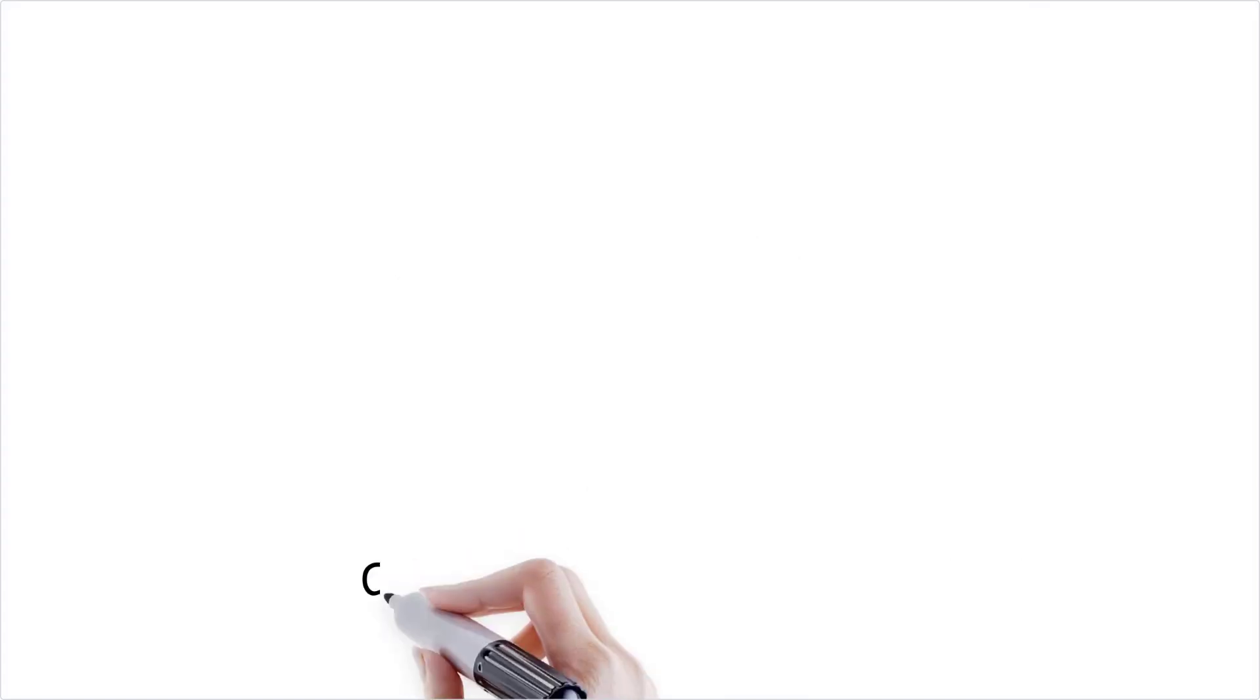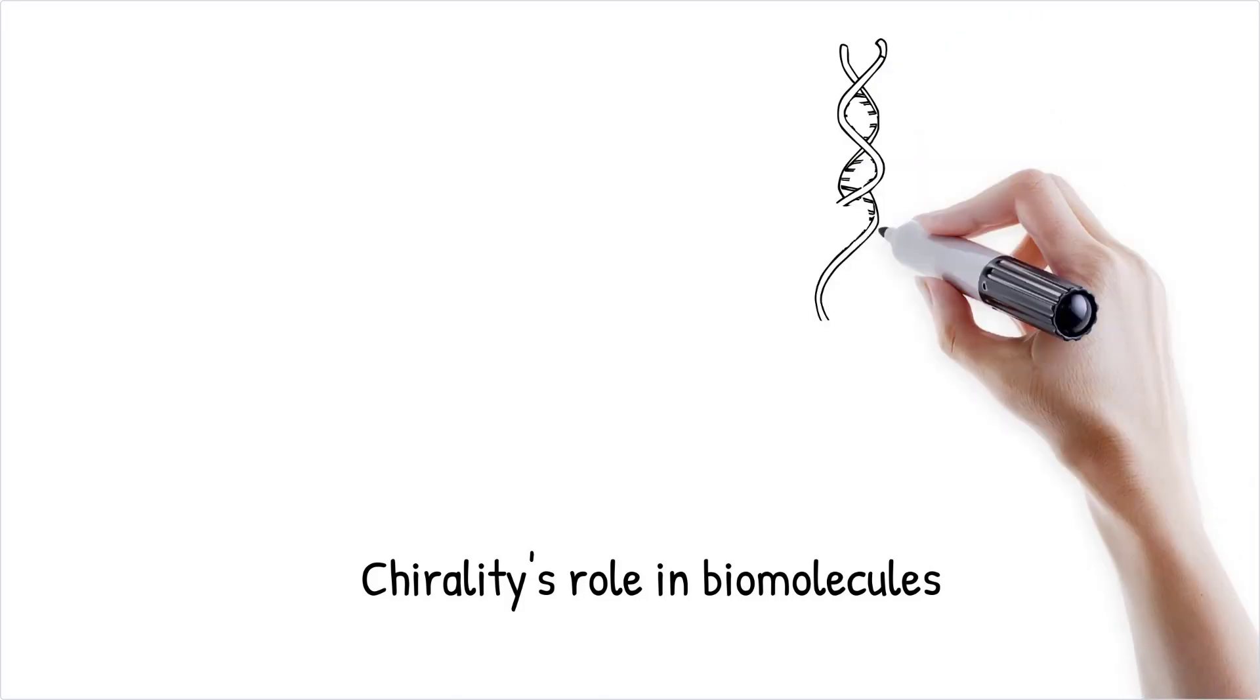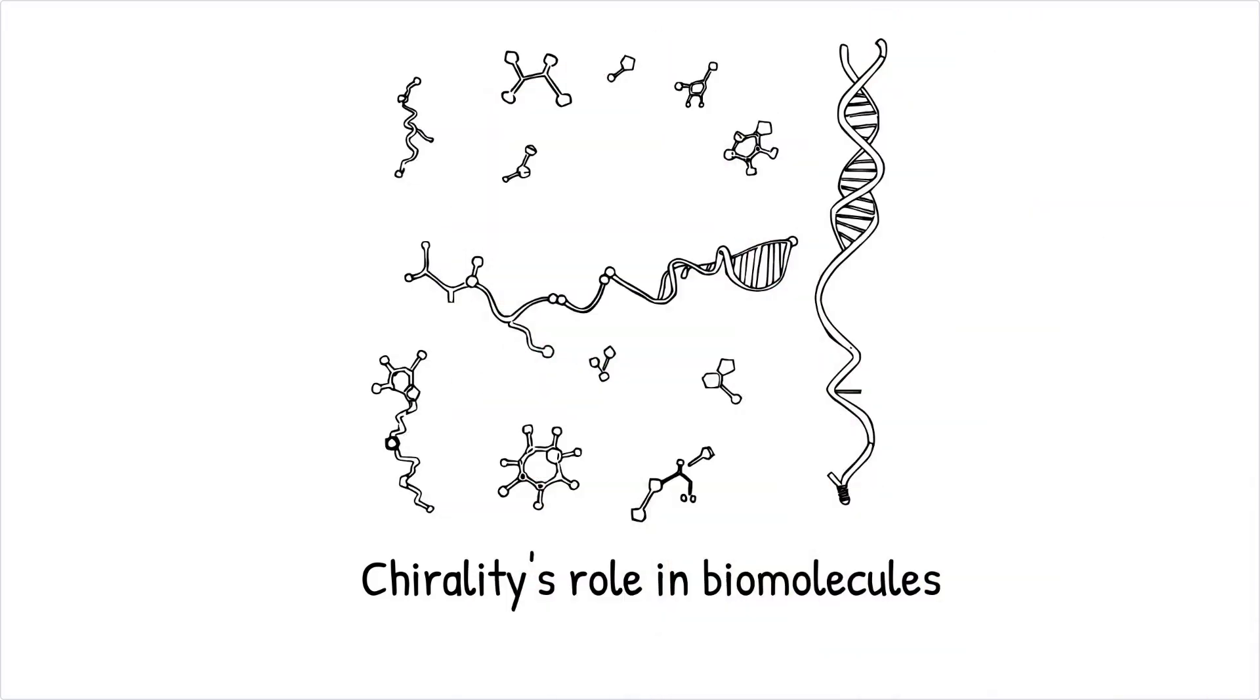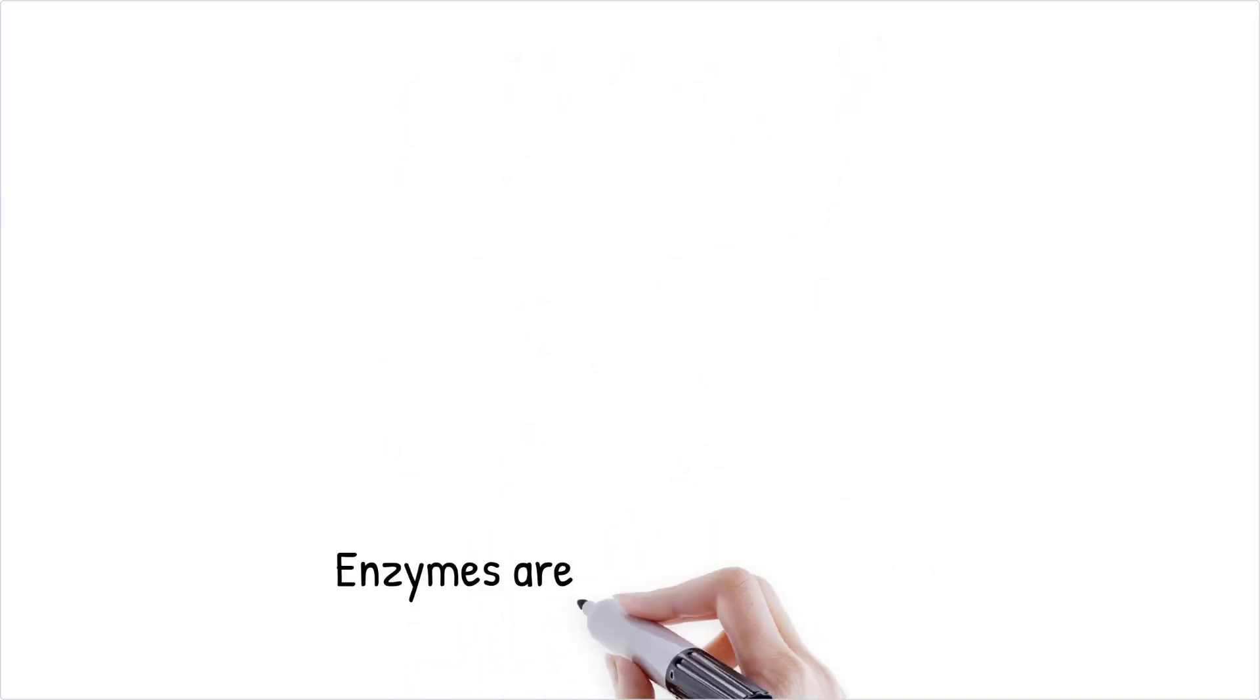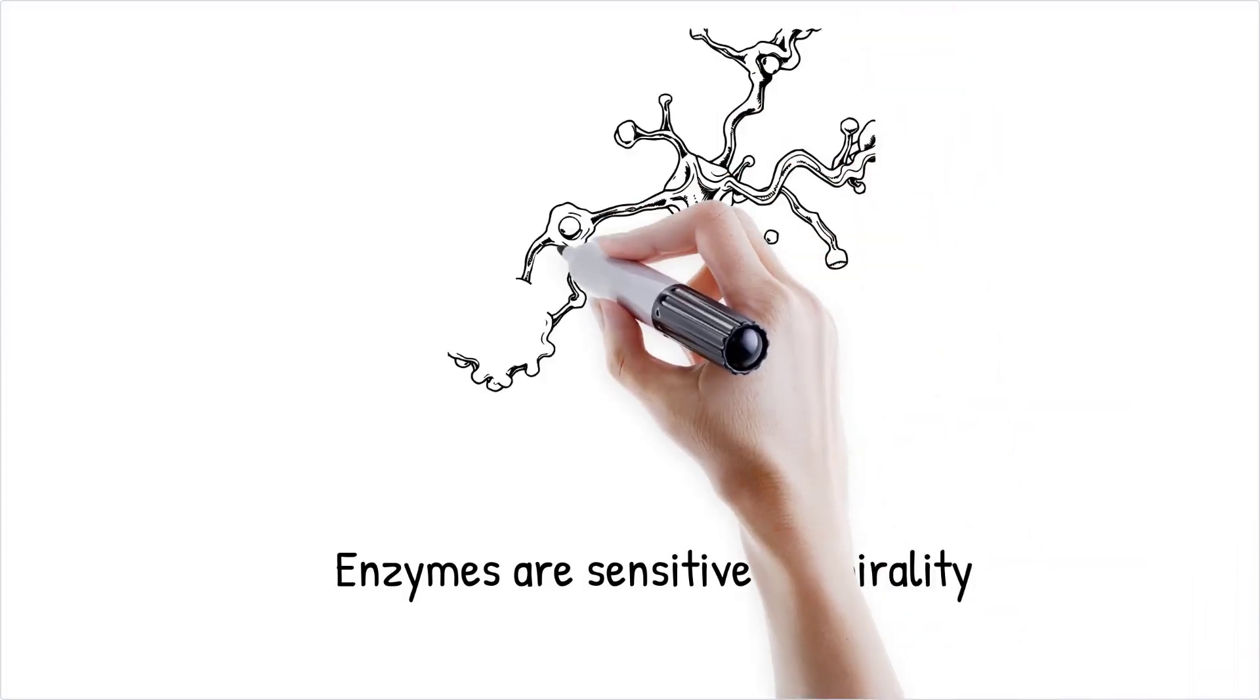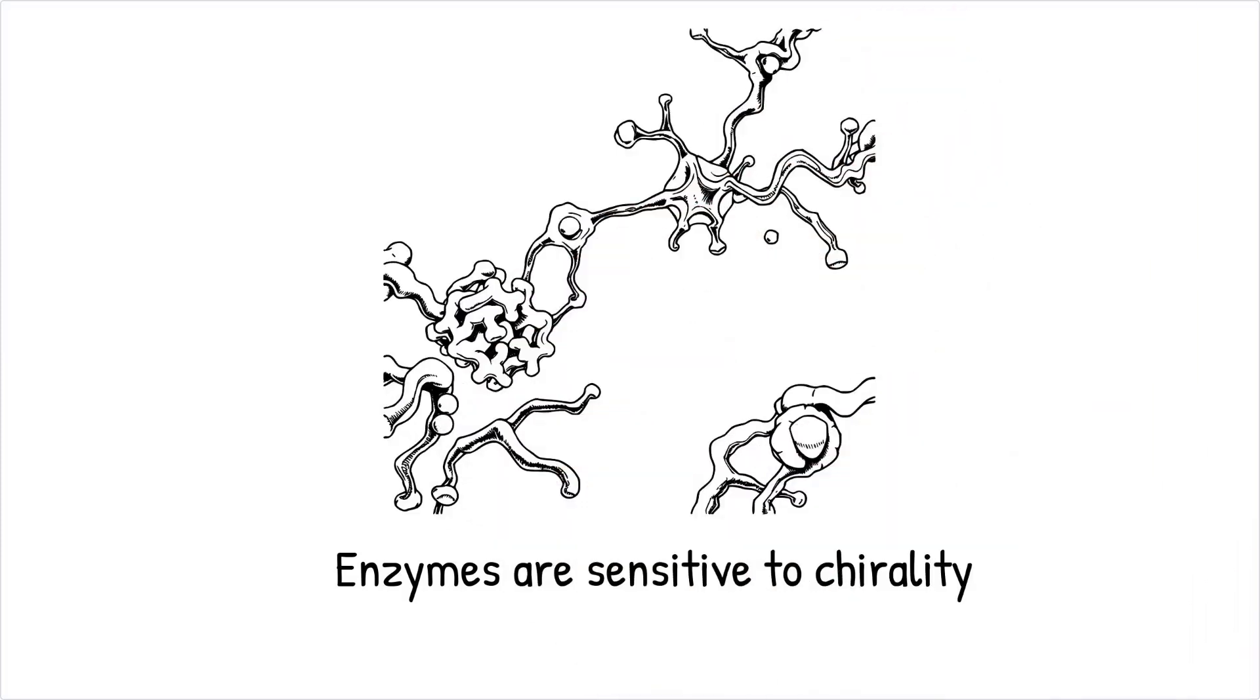Chirality is vital in biology because most biomolecules, including proteins, DNA, and carbohydrates, are chiral. Biological systems rely on the specific interactions between molecules, and the wrong chirality can disrupt these interactions. Enzymes, which catalyze biochemical reactions, are particularly sensitive to chirality, as they can only bind to substrates with the correct handedness. Homochirality ensures that biochemical processes are efficient and reliable.